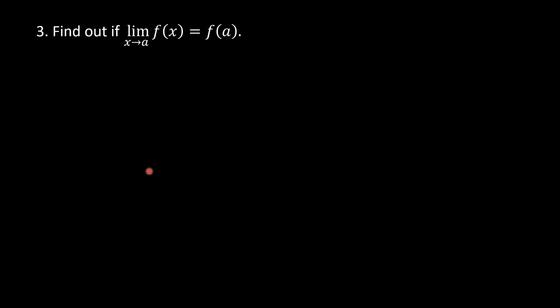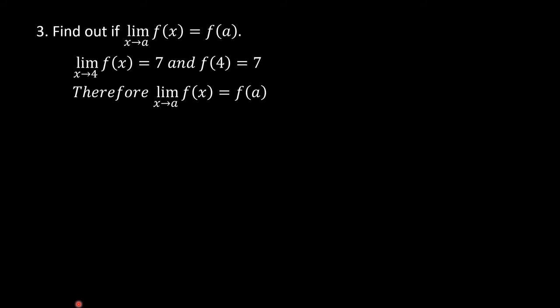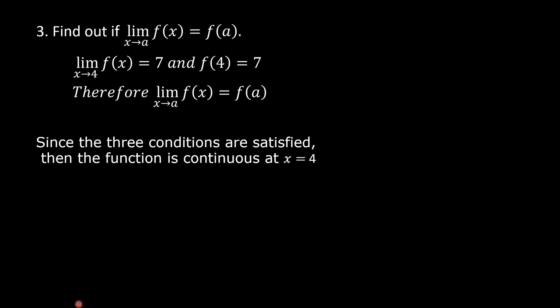Third step: find out if the limit of f(x) as x approaches a is equal to f(a). Since the three conditions are satisfied, the function is continuous at x = 4.